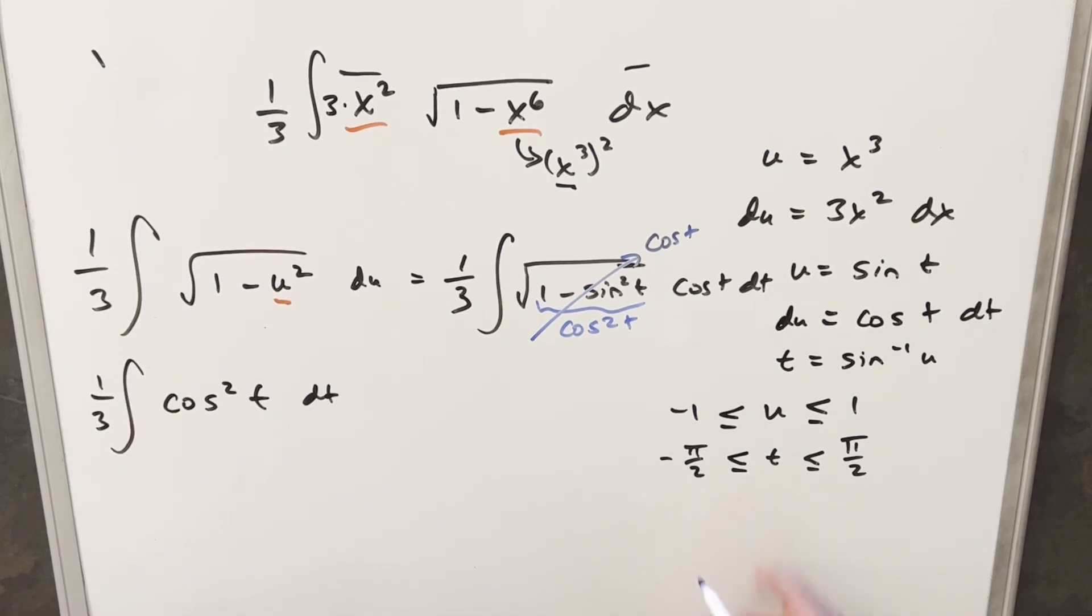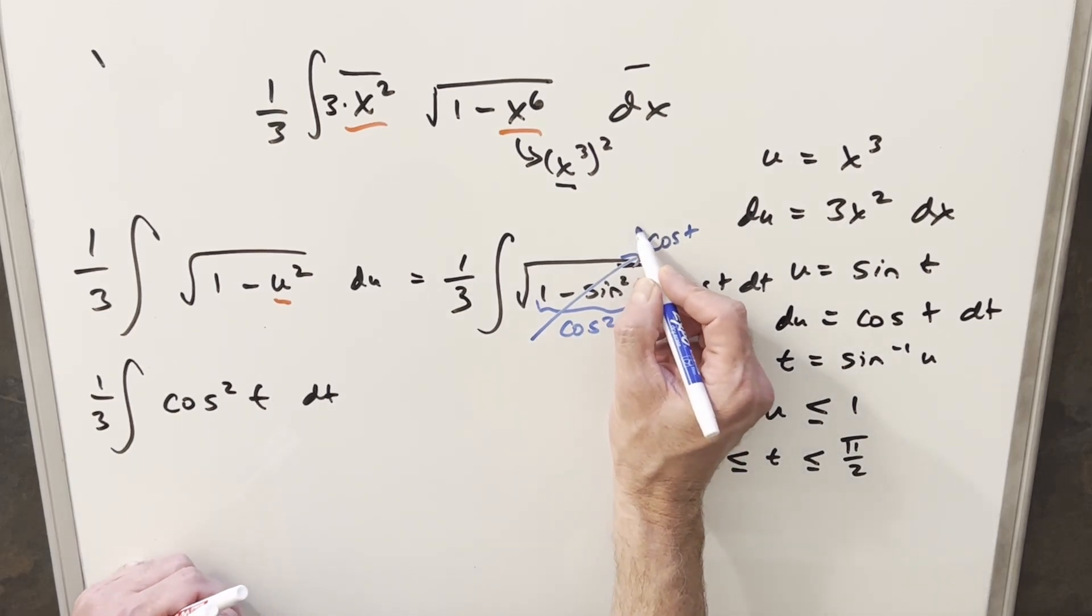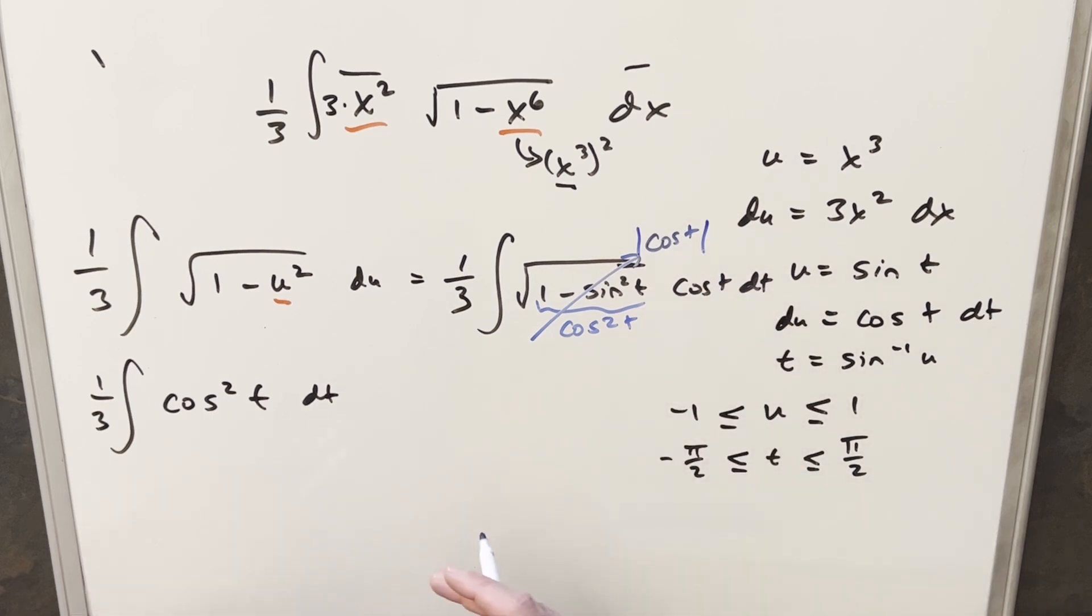But the reason I want to show that t is in this range is because technically, when we take the square root here, we get the absolute value of cosine t. But in this range between minus pi over 2 and pi over 2, this is just quadrants 1 and 4. But cosine t is always positive there, and that's how I drop the absolute value. And we get cosine squared t here.